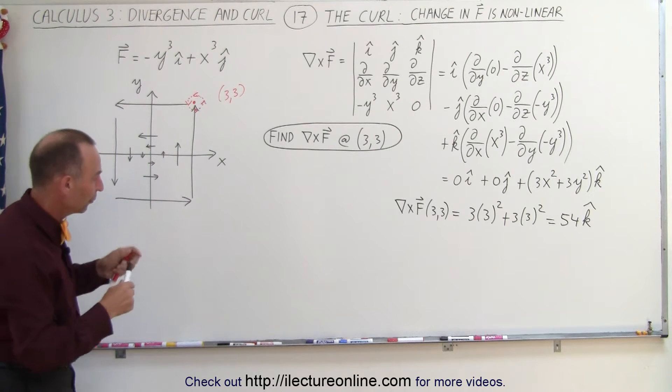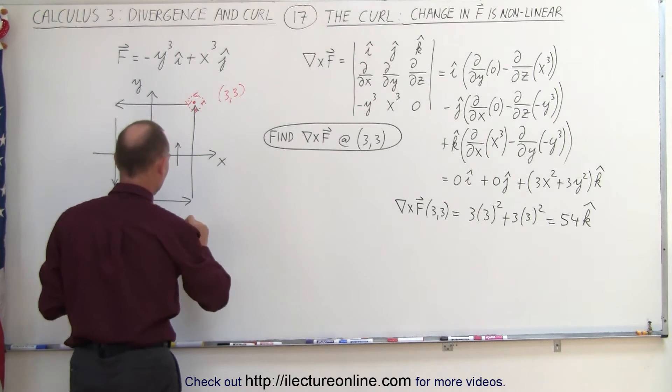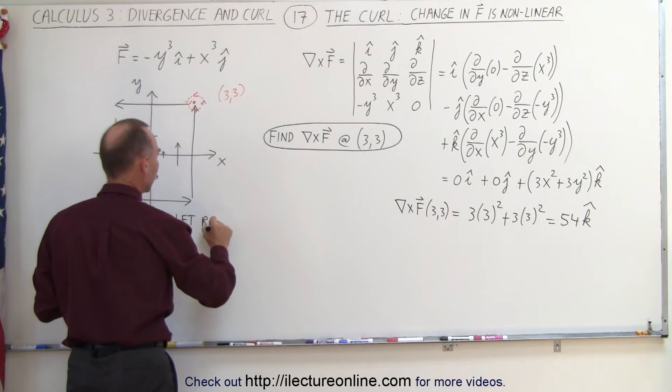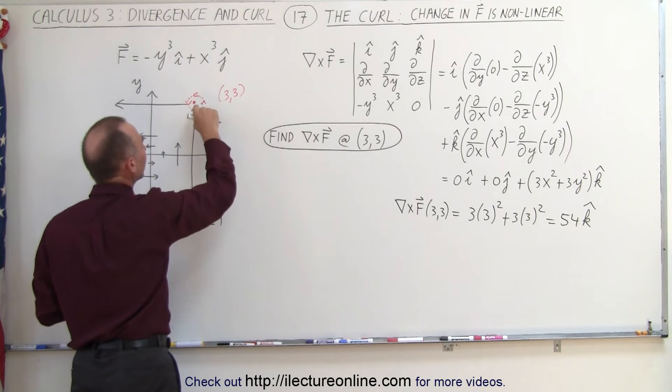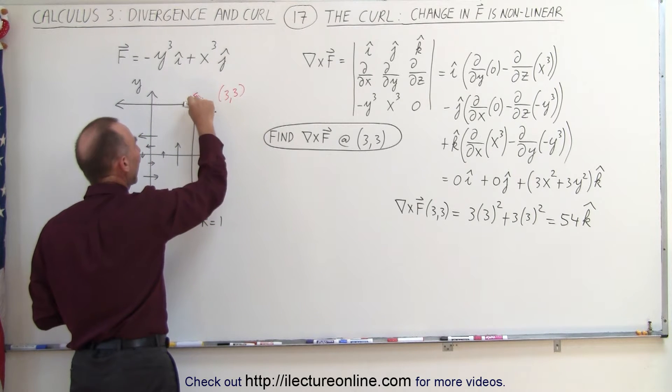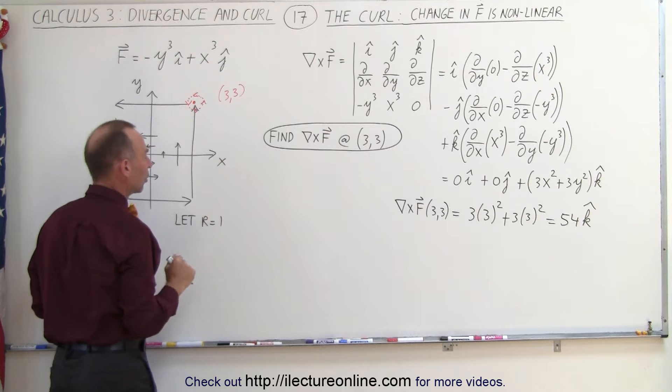So what we're going to do first is we're going to let r equals 1. We're going to move one unit to the right, one unit up, and assume that the change will be constant as it would be at that particular location.